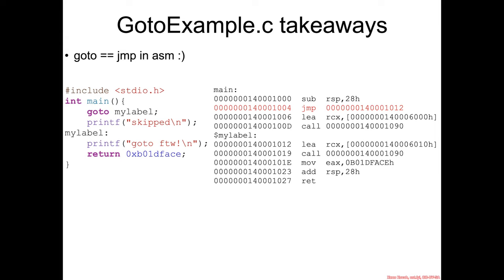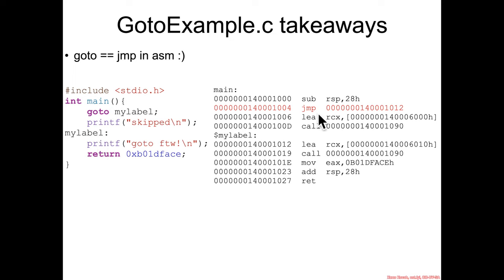The takeaways from the goto example are very trivial. The basic point is that the goto C statement directly translates into a jump statement. Goto always unconditionally goes to whatever label is specified, and a jump assembly instruction always unconditionally goes to the address that's specified.